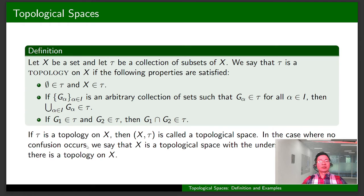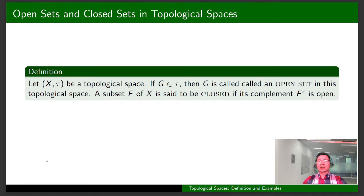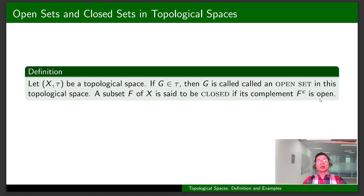In the case when no confusion occurs, we say that X is a topological space with the understanding that there is a topology on X. Next, I'm going to talk about the definition of an open set and a closed set in a topological space. Let (X, τ) be a topological space. If G is in τ, then G is called an open set. A subset F of X is said to be closed if its complement is open.